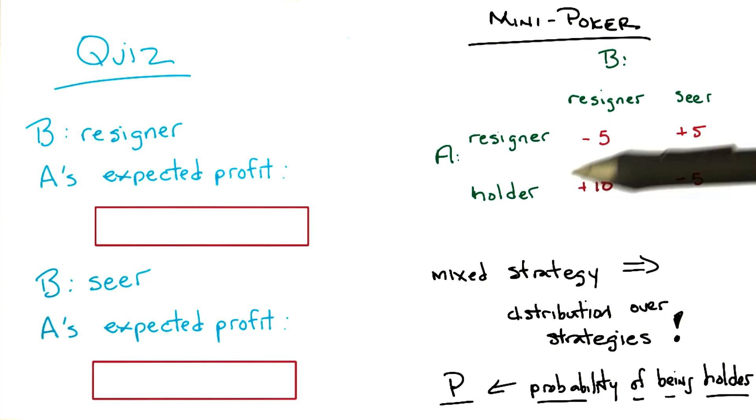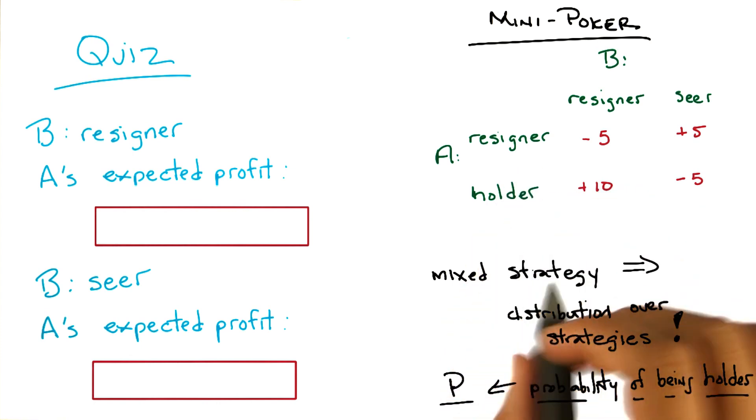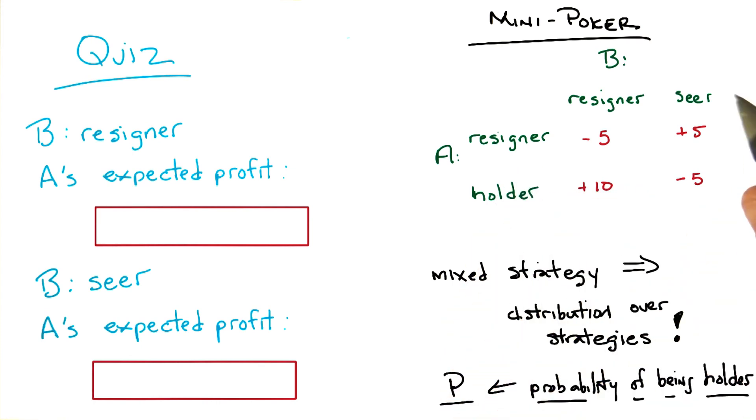So the only difference between a mixed strategy and a pure strategy is that for a mixed strategy, you choose some probability over all the different strategies that you might choose. So you decide that going into this, I'm going to flip a coin, and half the time I'm going to be a resigner, and half the time I'm going to be a holder. Or 30% of the time I'll be a resigner, and 70% of the time I'll be a holder.